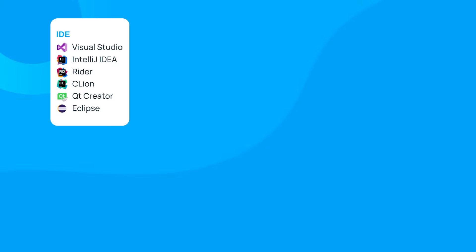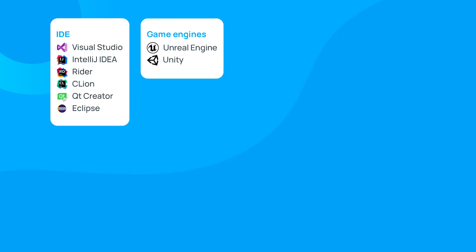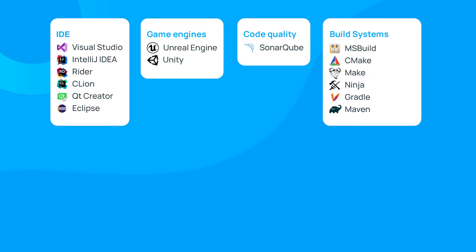Of course, PVS Studio is not just a console utility — it's a complete solution to improve your code's quality, safety, and security. We made it easy to integrate the analyzer into various development environments, build tools, and pipelines. PVS Studio supports many game engines and can fully integrate with SonarQube, a system for code quality control, as well as many build systems and continuous integration systems, both on-premises and in the cloud. If you don't see your development environment or build system listed, we have CL Monitor — a compilation monitoring system — which lets you track all successfully compiled files and then use console tools to initiate their analysis.